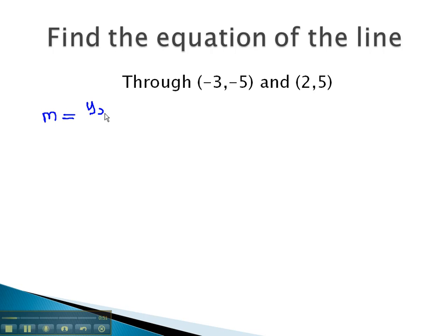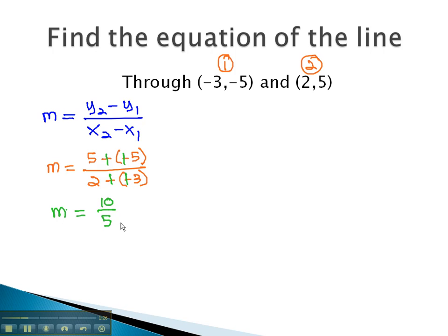Slope is y2 minus y1 over x2 minus x1. Using our first and second points, we plug our values in and find y2 is 5 minus y1, which is negative 5, over x2, which is 2, minus x1, which is negative 3. Subtracting a negative is like adding a positive, and so we find that the slope of our line is 10 fifths or 2.